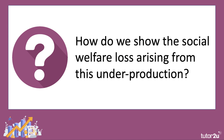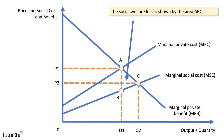And how do we show the social welfare loss arising from this underproduction? Well, let's label some areas here — A, B, and C. The social welfare loss is shown by the area A, B, C. If we stick at Q1 instead of going to Q2, we're missing a gap where the benefit is greater than the social cost. And therefore, if we remain at Q1 instead of going to Q2, then there is a net loss of social welfare.